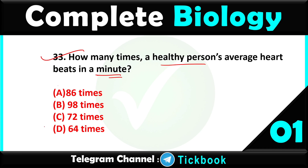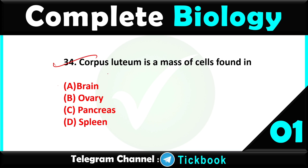Question thirty-three: how many times does a healthy person's heart beat on average in a minute — option number C, 72 times. Question thirty-four: corpus luteum is the mass of cells found in — option number B, ovary, will be the correct answer.